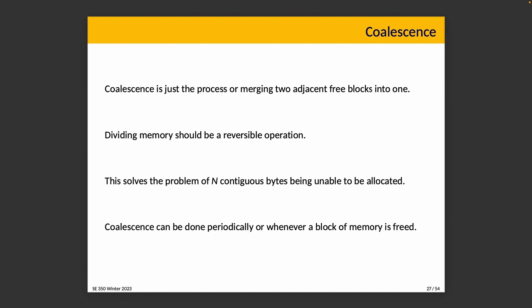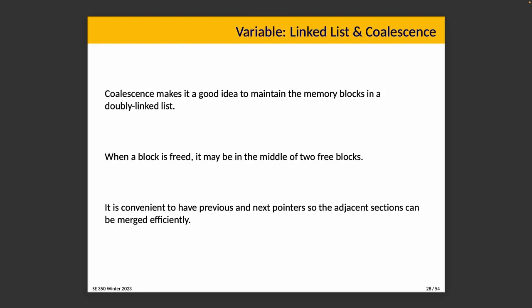Coalescence can be done periodically or whenever a block is freed, by checking if it should be combined with its neighbors. If yes, combine them; if no, don't change anything. It makes sense to maintain memory in a doubly linked list so it's easier to check neighbors on each side when a block is deallocated. With only a next pointer, it's harder to identify whether we should coalesce with something that comes before it.